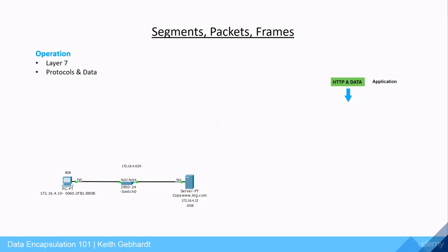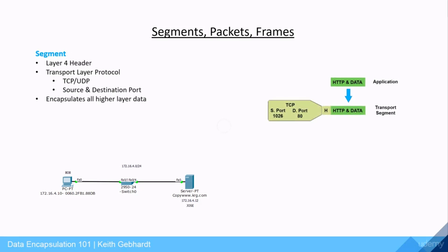It needs to establish that HTTP connection, and along with that connection it also has other data associated with it. For this course we won't be concerned with exactly what that data entails, but looking at the green box we can see this is our application layer data block. This is where the data encapsulation process actually begins.